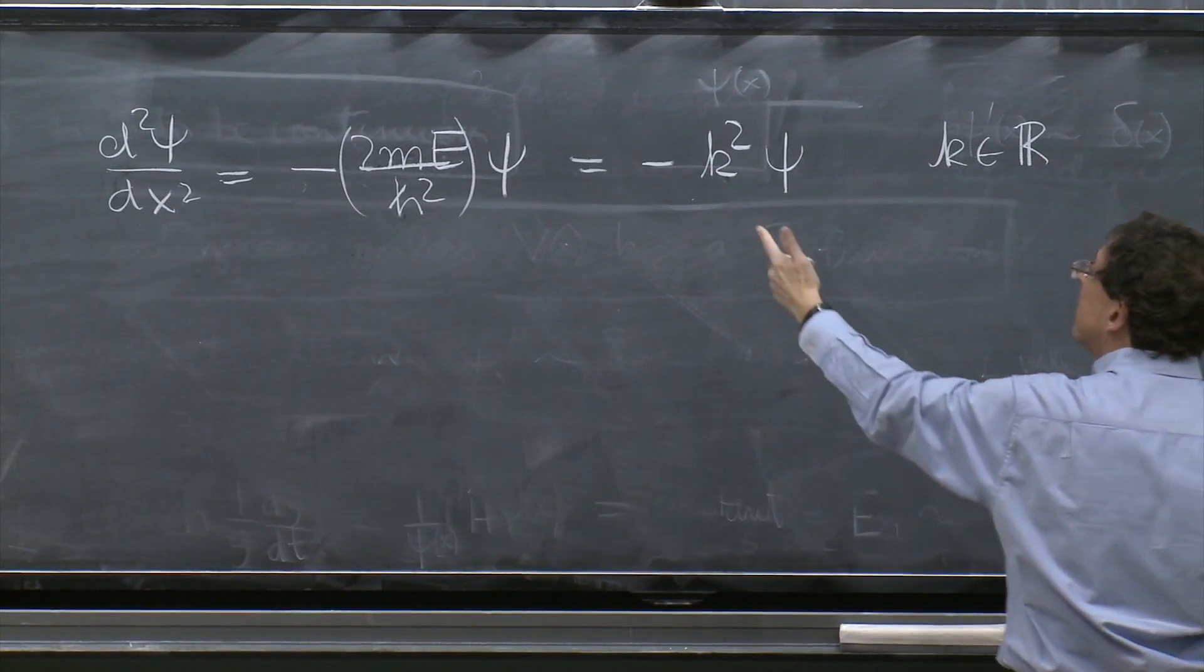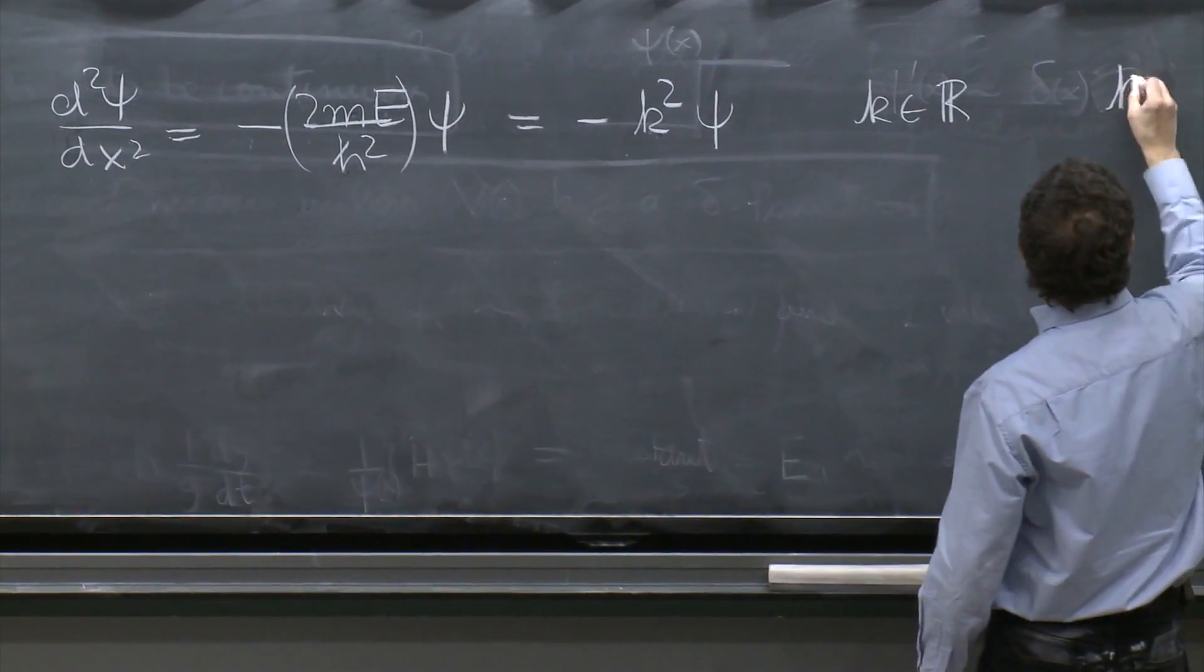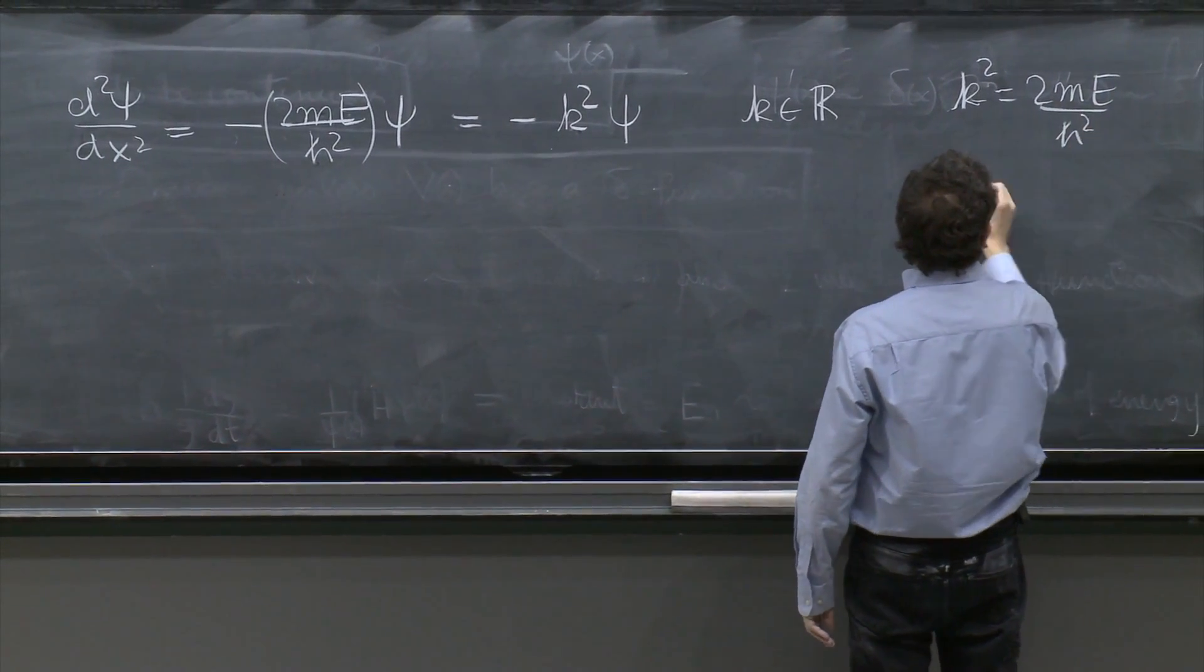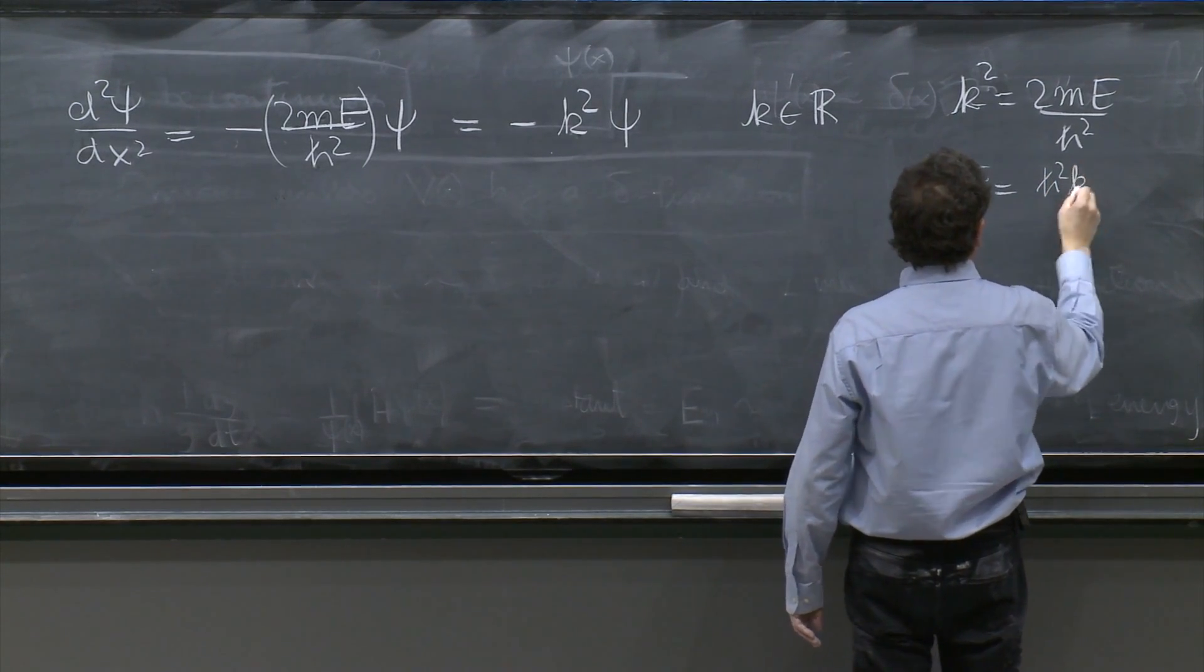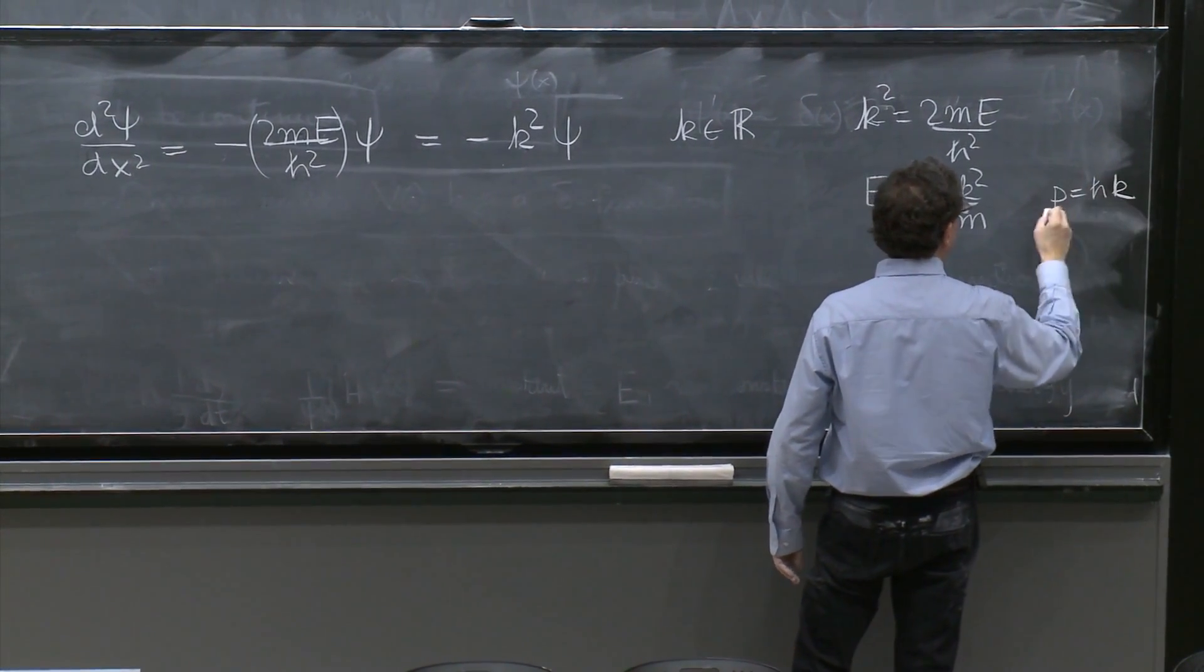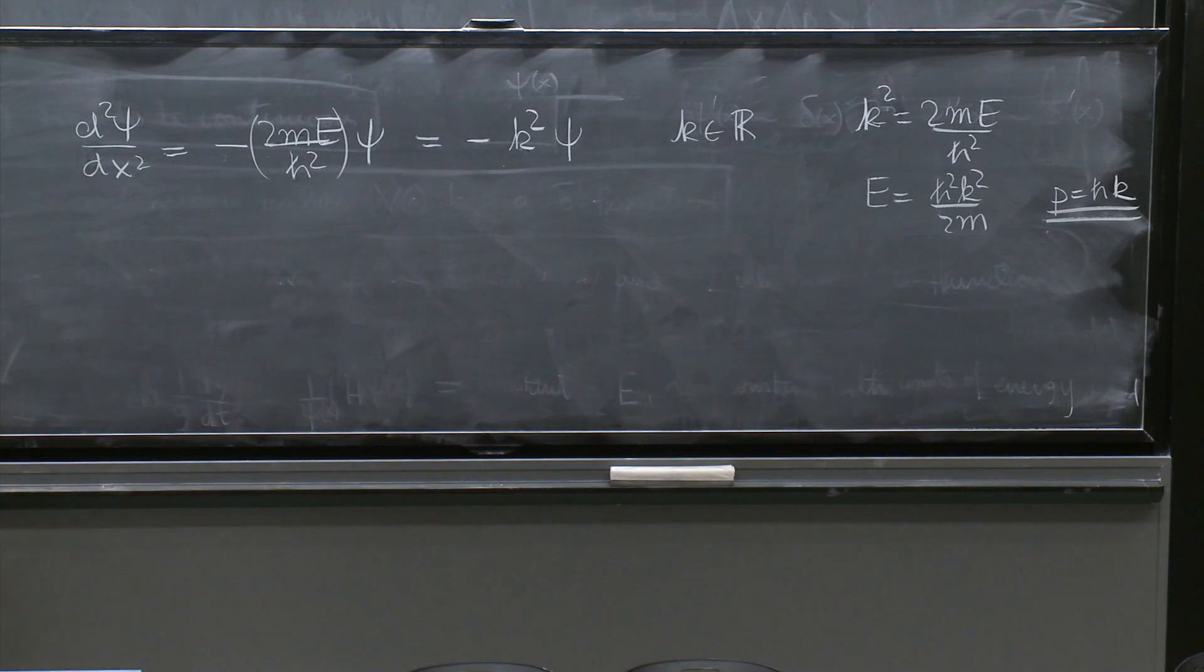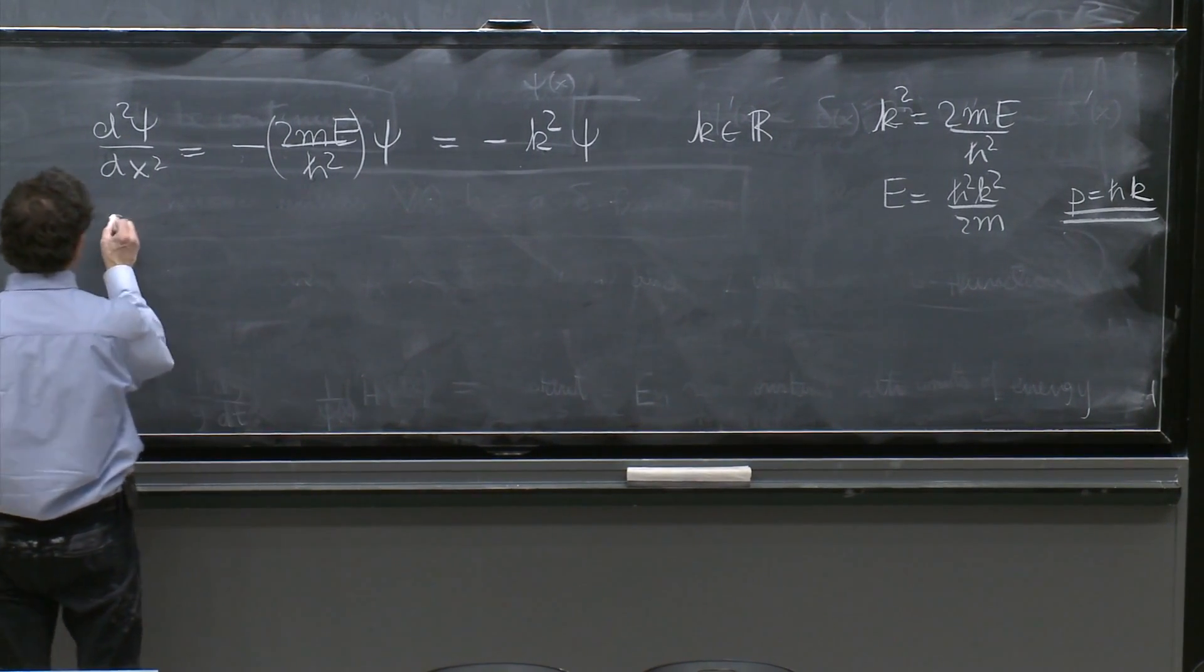And in fact, this is a nice notation, because if you are setting k squared equal to 2mE over ℏ squared, you're saying that E is equal to ℏ squared k squared over 2m. So in fact, the momentum is equal to ℏk, which is very nice notation. So this number k actually has the meaning that we usually associate, that ℏk is the momentum.